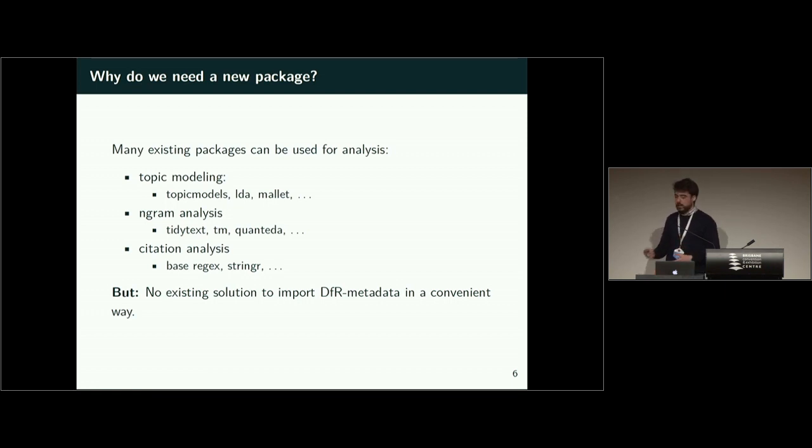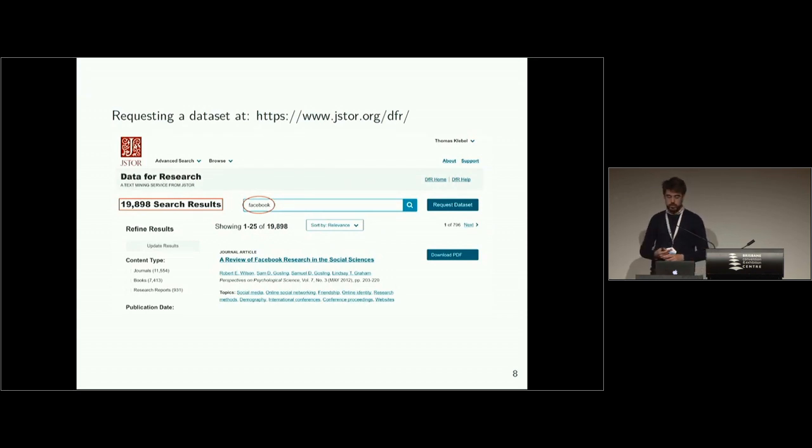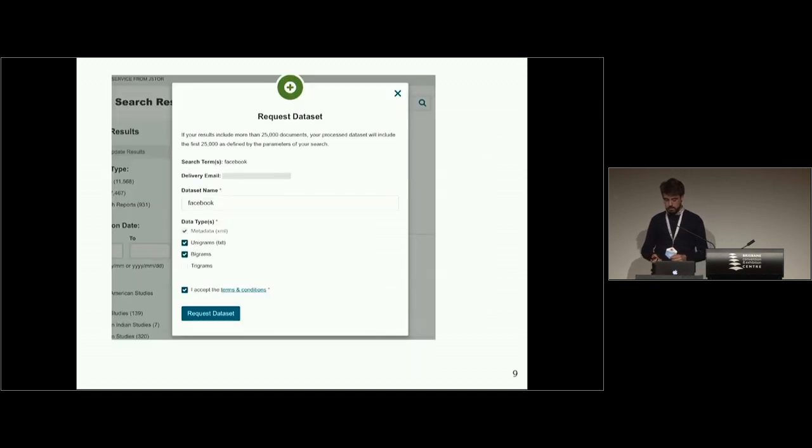I will explain a few key functionalities of the package with a fictional example. Let's assume we're interested in Facebook. What are researchers writing about Facebook? What are the topics? In which disciplines are they researching about it? And for such an analysis, we would first go to the data for research website and search for the term Facebook. We would get around 20,000 items as a result.